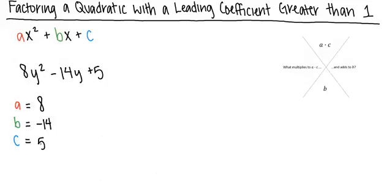If we multiply a times c, we're multiplying 8 times 5, obtaining a product of 40. We can now put this number in the top part of our chart. We have identified b as negative 14, so we can put this in the bottom part of our chart.